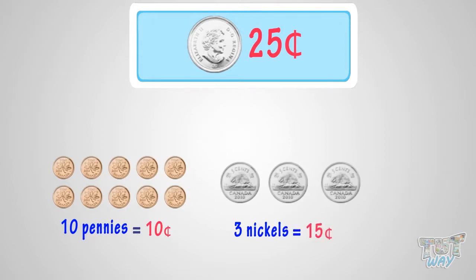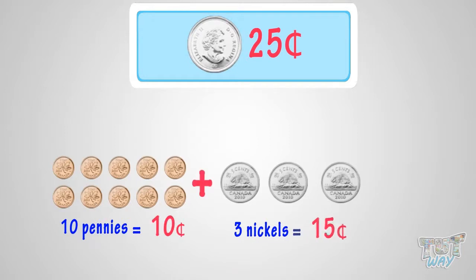Another way can be 10 pennies and 3 nickels. As 10 pennies will make 10 cents, and 3 nickels will make 15 cents, so in total we will have 25 cents.